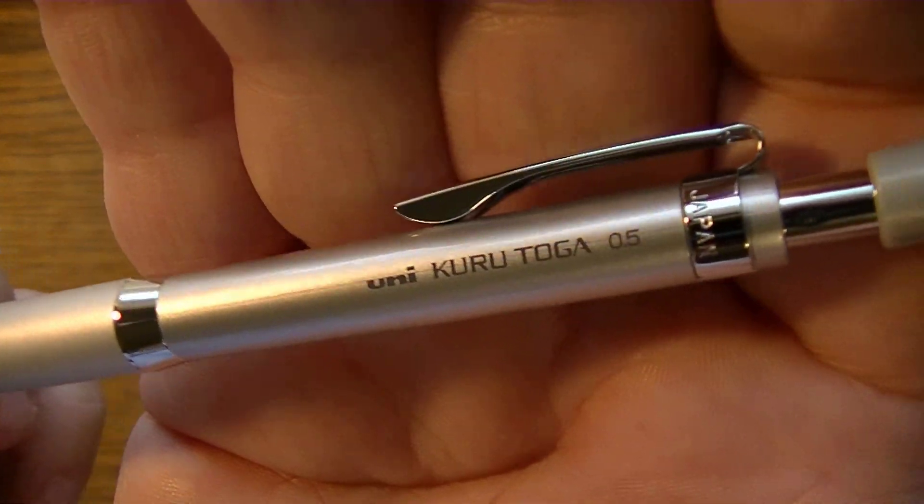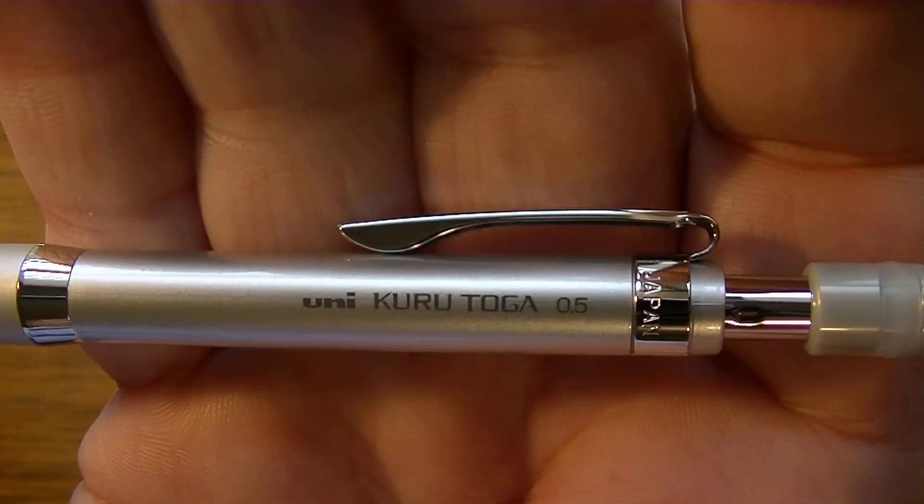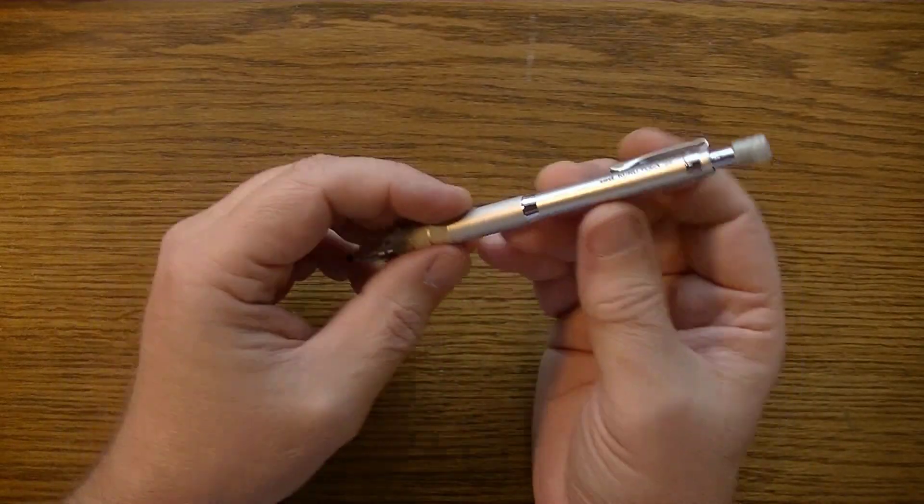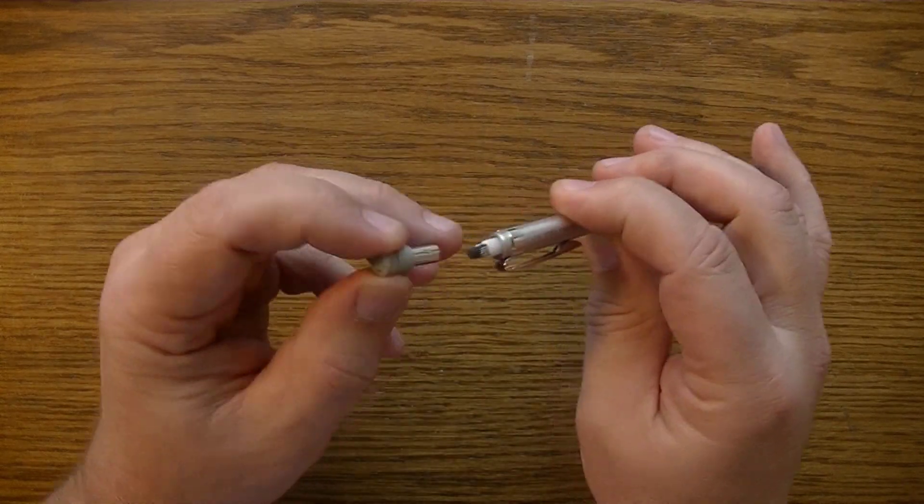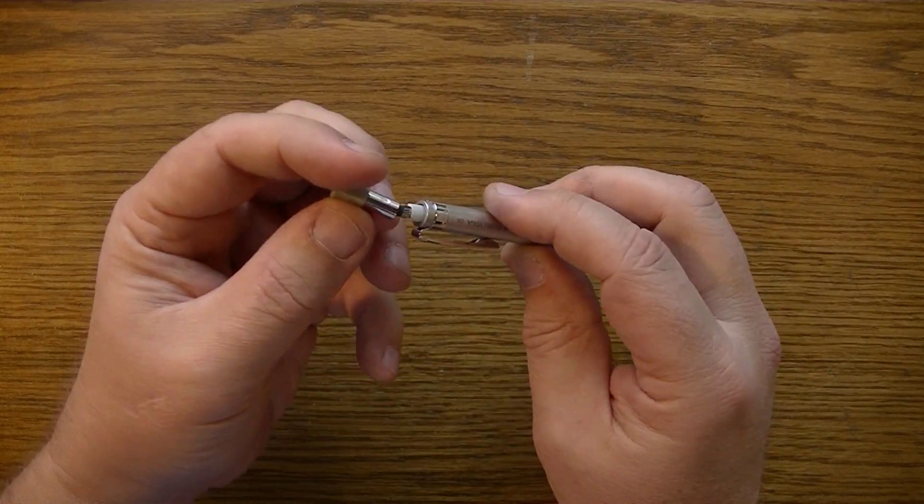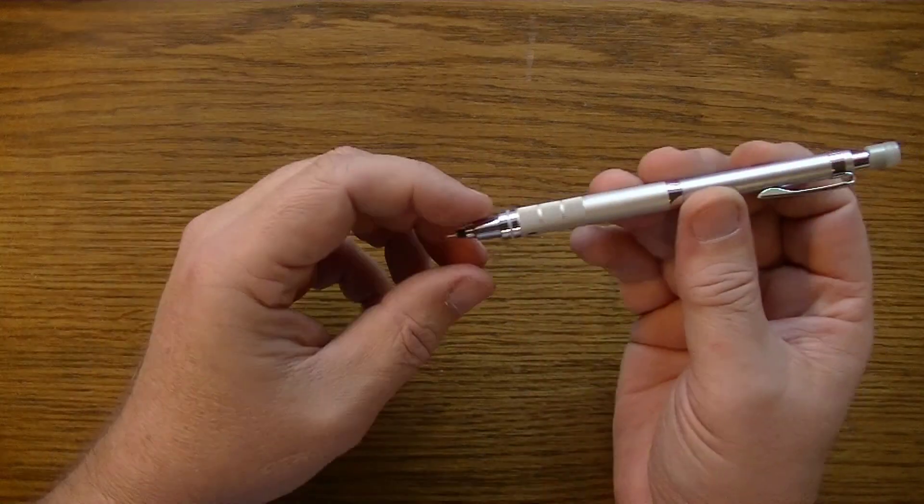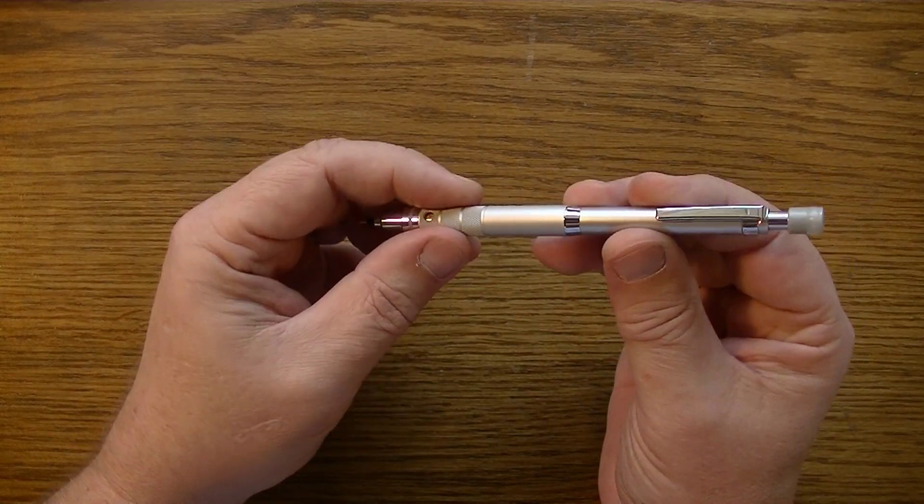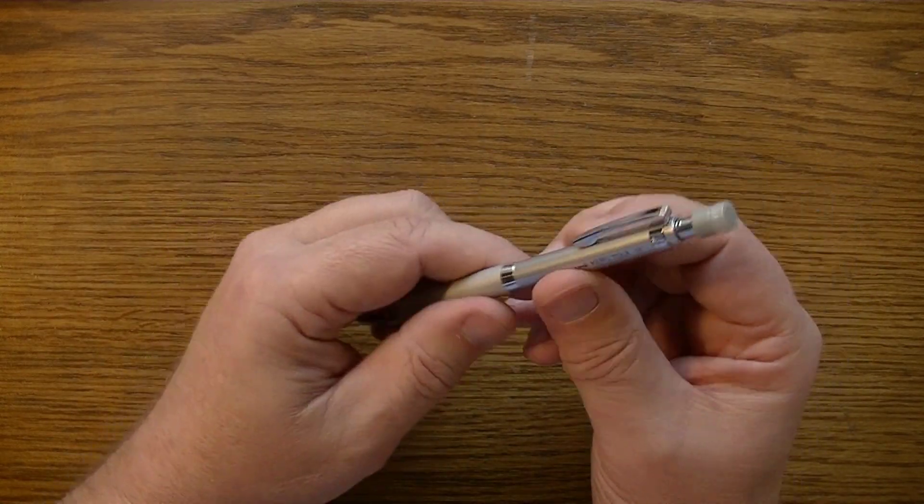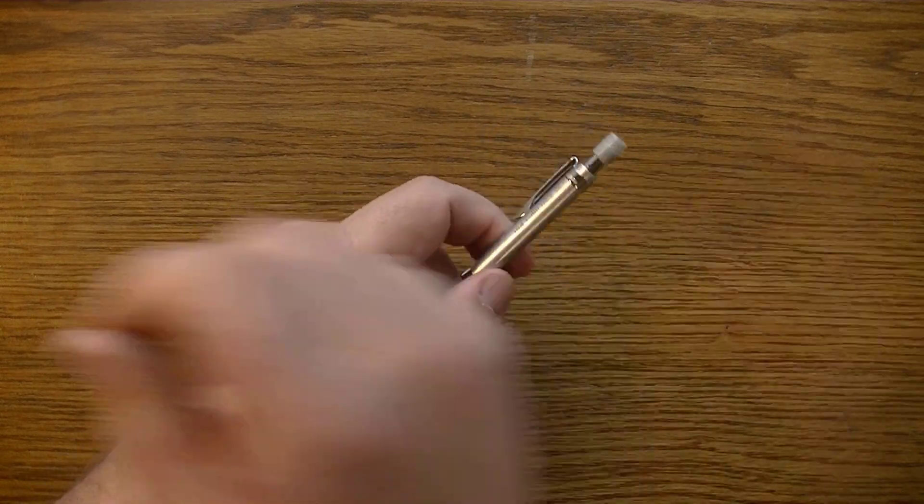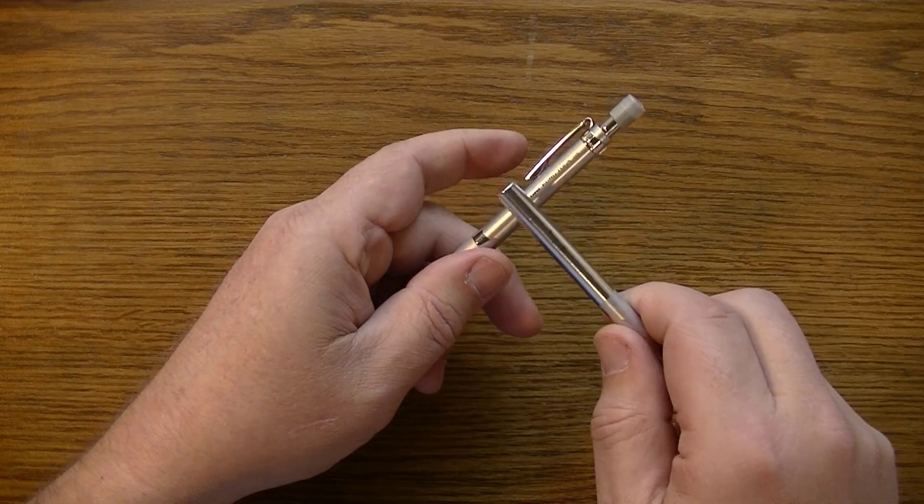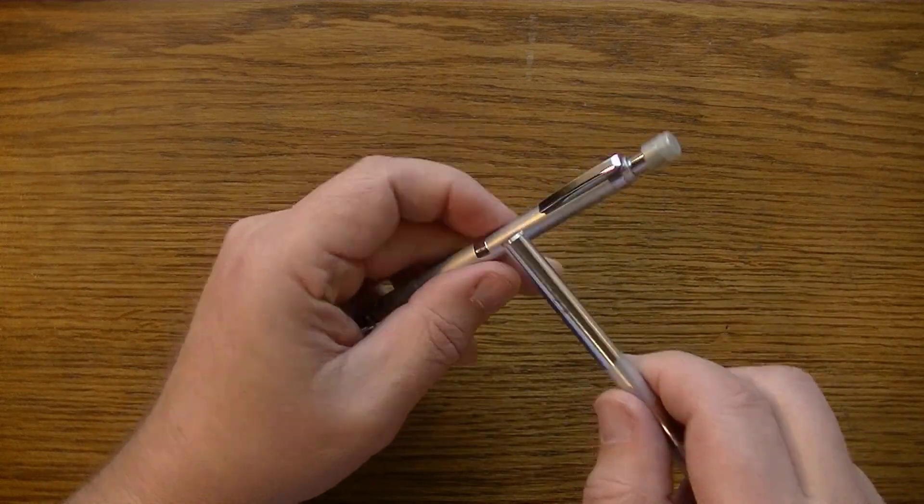The Uni Kuru Toga. Now I've read some things about this pencil online and apparently they were talking about the model that was made of plastic. This is plastic, but it sounds more like metal to me.